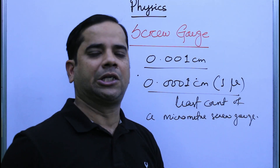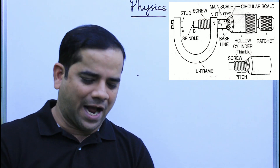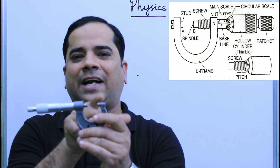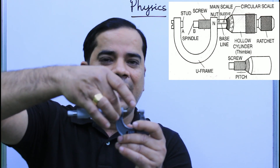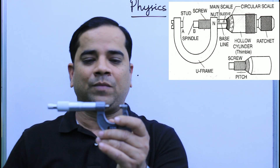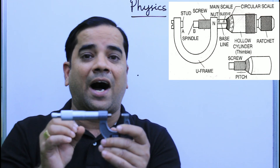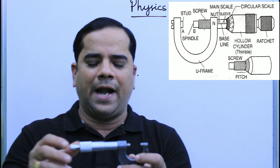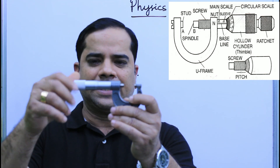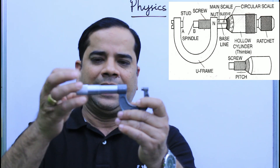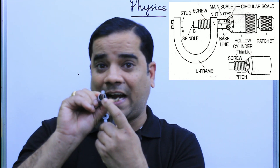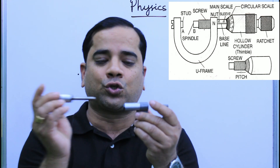Now let us discuss the screw gauge in detail. As you can see, I am holding a screw gauge in my hand. It has a U-shaped frame. One end is flat — this flat end is called the stud. The other end has a cylindrical sleeve called the knot, and the knot and the sleeve are threaded from inside. There is also a hollow cylinder rotating over the sleeve.